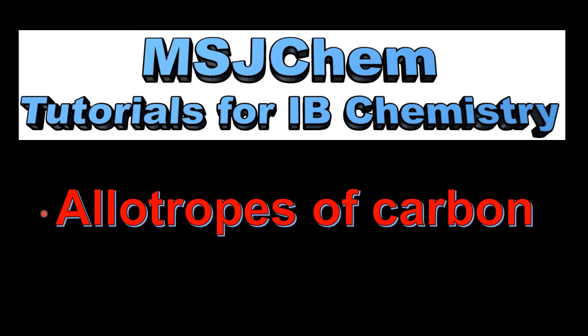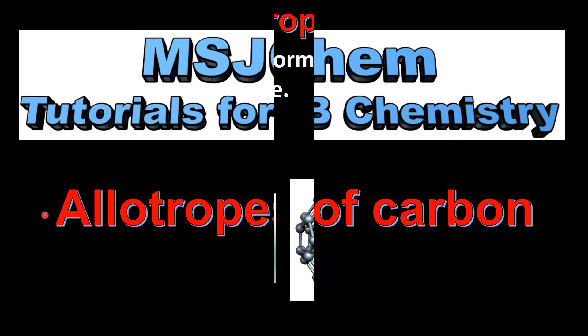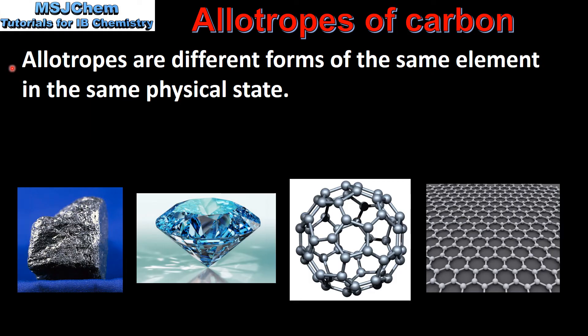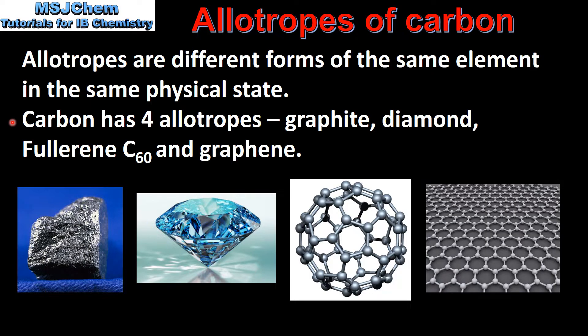This is MSJChem. In this video I'll be looking at the allotropes of carbon. Allotropes are different forms of the same element in the same physical state. Carbon has four allotropes: graphite, diamond, fullerene C60, and graphene.